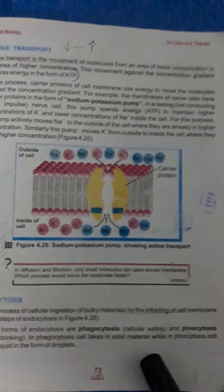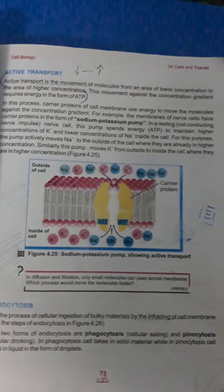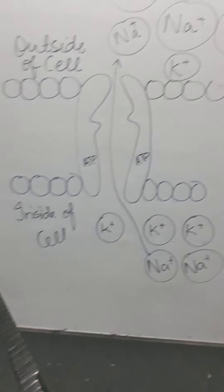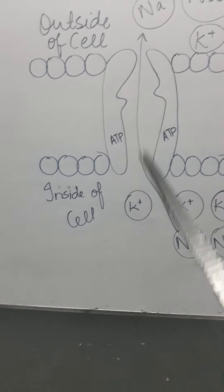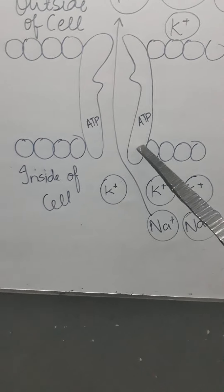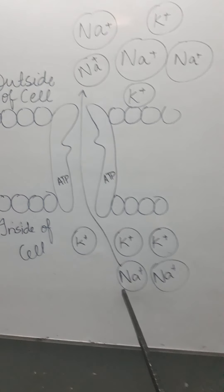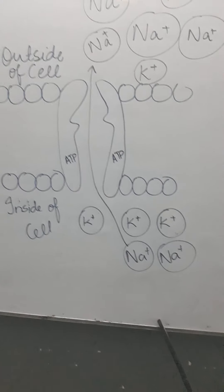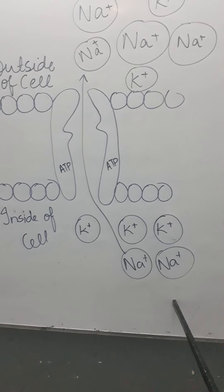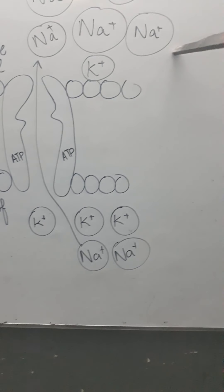Now look at book page number 73. Suppose this is any kind of cell in the human body or plant body. This is the interior of the cell. K+ is potassium and Na+ is sodium. As you can see, this is the outside of the cell. There is a semipermeable membrane with a pore and a large carrier molecule that uses energy in the form of ATP. How many sodiums are inside? Two. How many are outside? Four. So inside is lower concentration and outside is higher concentration of sodium.